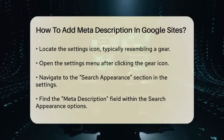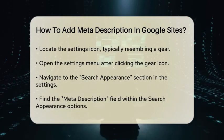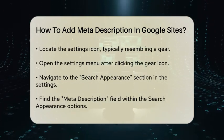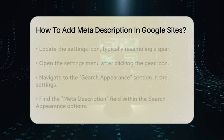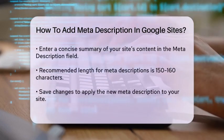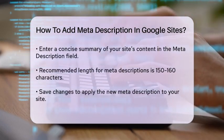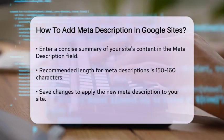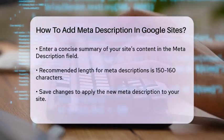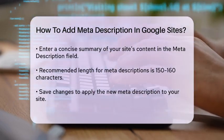Look for the field labeled Meta Description. Here, you can enter a concise summary of your site's content. Aim for a length of about 150 to 160 characters to ensure it displays properly in search results.